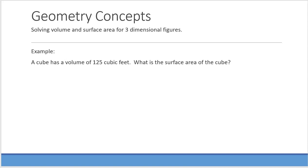The first thing we're going to do is solve the first part of the problem. The general formula for volume is length times width times height, but because it is a cube the length, width, and height are all the same. Therefore the formula for the volume of a cube is equal to the side cubed. They give us the volume and tell us it's 125 cubic feet.